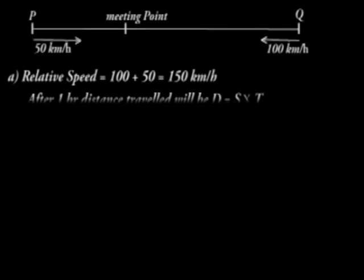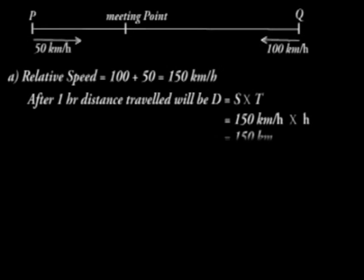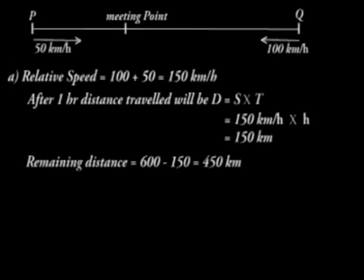After one hour, the distance traveled will be speed times time, which is 150 times one hour, which is 150 kilometers. They will have covered a total of 150 kilometers in one hour. The remaining distance will be 600 minus 150, which is 450 kilometers.